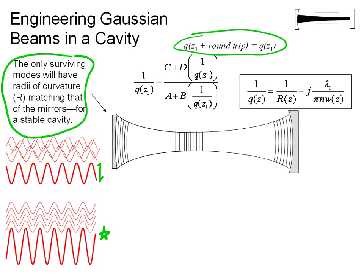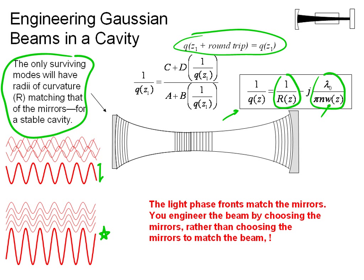And remember, once you have the Q parameter at any point in space, you're able to look at the real part and get out the radius of curvature of the beam and the imaginary part, and from that extract the waist radius at any point Z within the cavity.